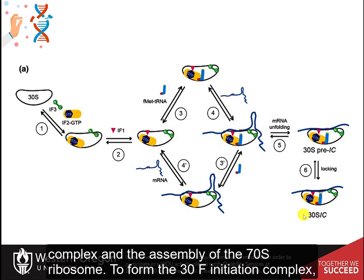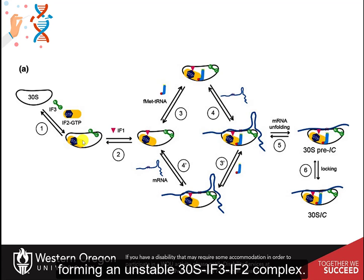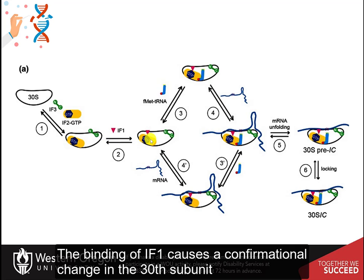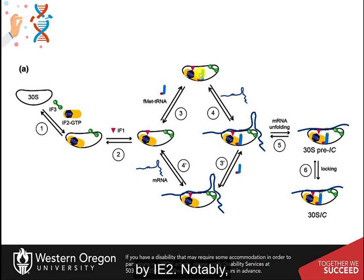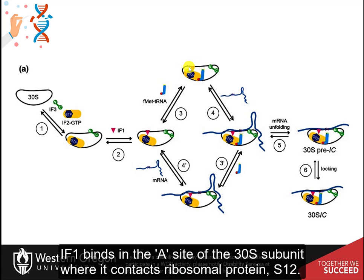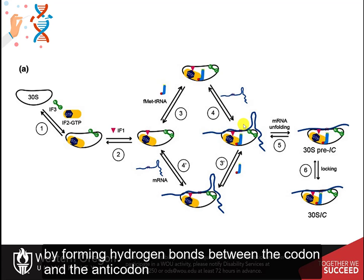To form the 30S initiation complex, IF3 and IF2 are the first factors to bind to the 30S subunit, forming an unstable 30S-IF3-IF2 complex. The binding of IF1 causes a conformational change in the 30S subunit, stabilizing the complex and allowing the recruitment of the tRNA fMet by IF2. Notably, IF1 binds in the A site of the 30S subunit, where it contacts ribosomal protein S12.